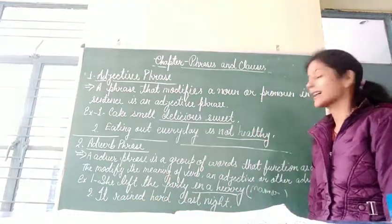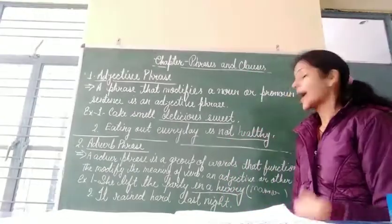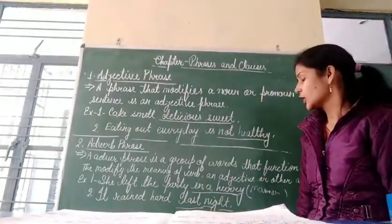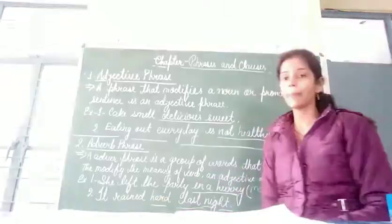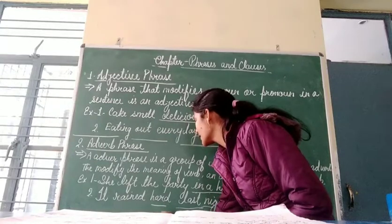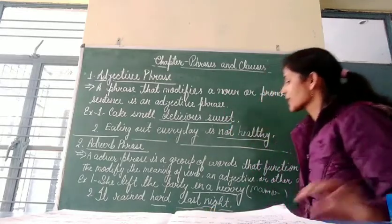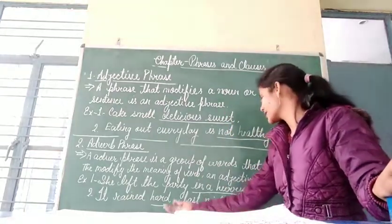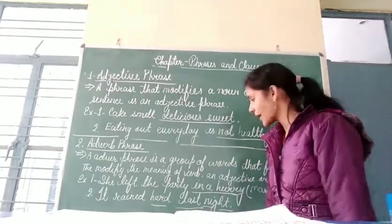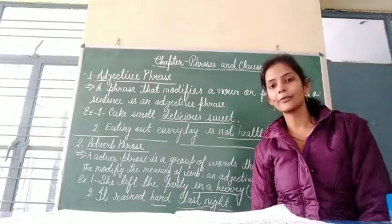Next example: 'It rained hard last night.' Rain has occurred — but in which manner? Hard. And when? Last night. So 'hard' is an adverb of manner and 'last night' is an adverb of time. Together, 'hard last night' forms an adverb phrase.